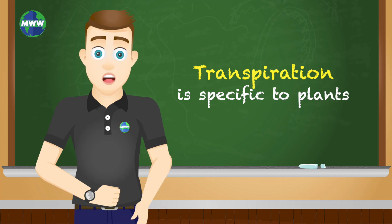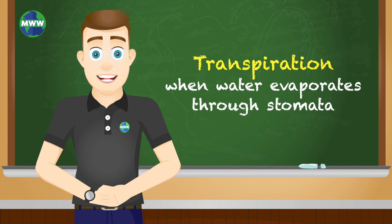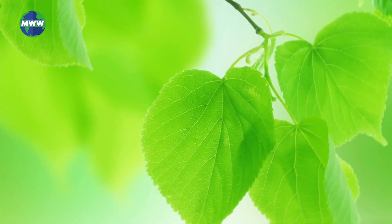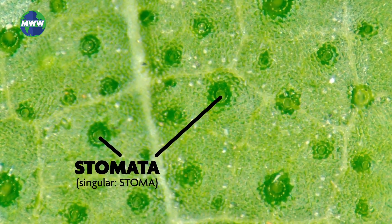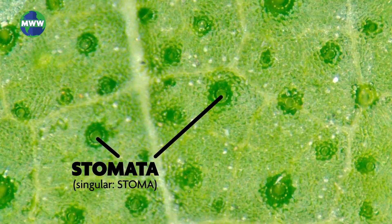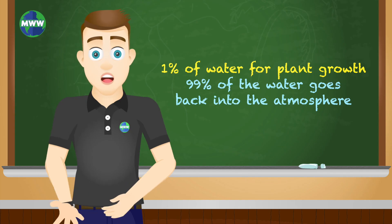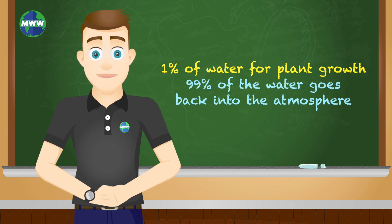Transpiration is a process specific to plants. It is when water evaporates from plants through stomata — small openings found on leaves that are connected to the stem and roots of a plant. Plants absorb water in the soil by their roots. Only 1% of the water that passes through the plant is used for growth, while the remaining 99% is passed into the atmosphere.